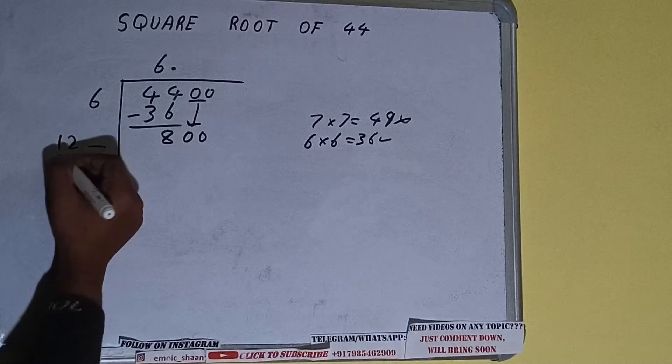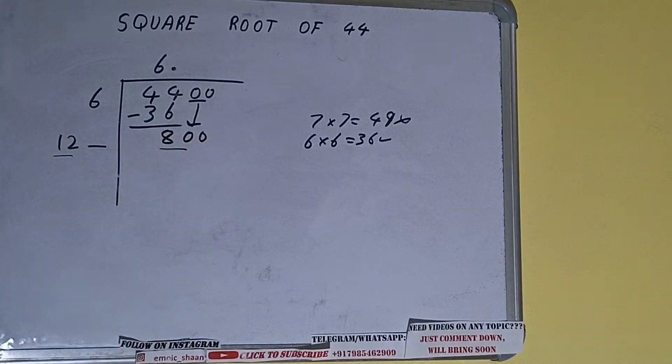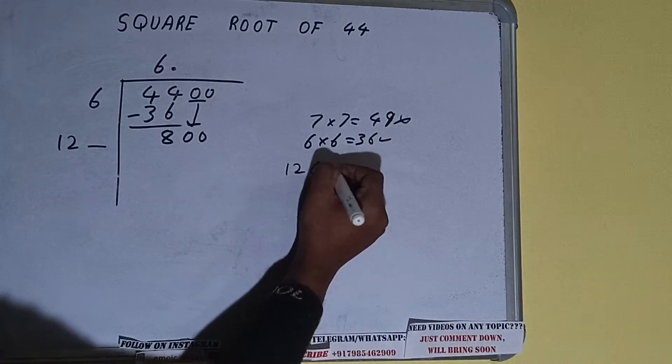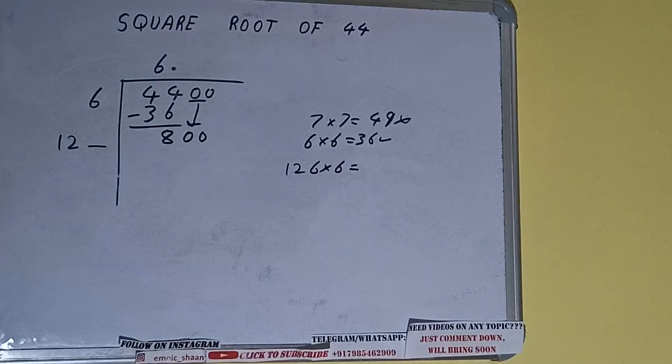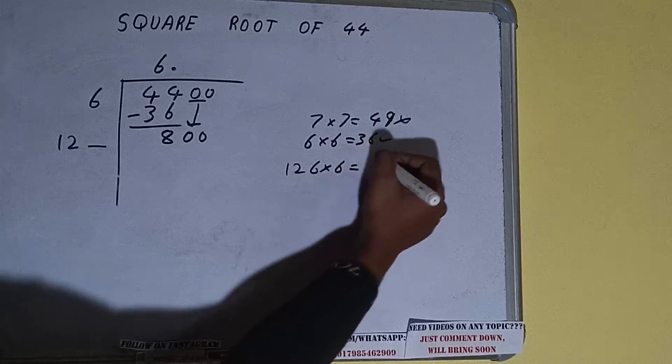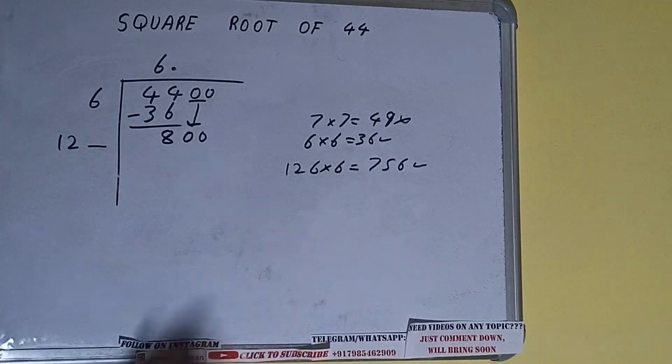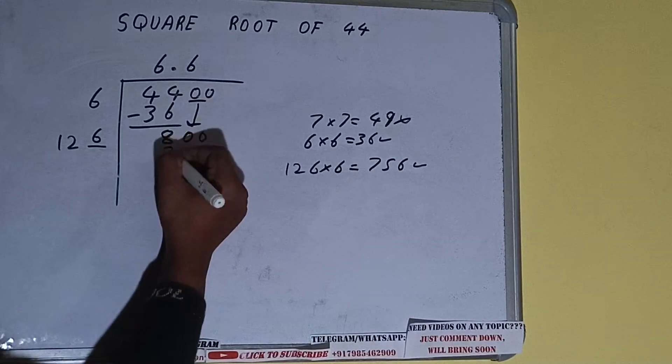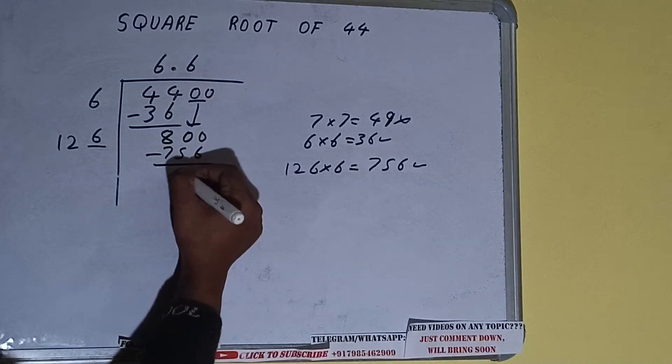Now compare this 12 with this 80. So 12 times 6 is 72, so we can try 6 times. 126 into 6 we can try. It will be 756 which is good to take. So 6 here and 6 here, 756, subtract, 44 will be left.